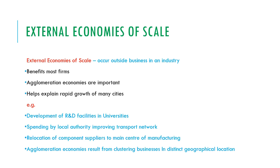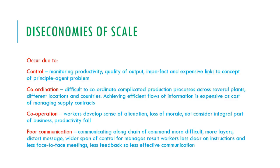So what are external economies of scale? External economies of scale occur outside a business and an industry. They benefit most firms, include agglomeration economies, and help explain the rapid growth of many cities. Examples include the development of R&D facilities and universities, spending by the local authority improving the transport network, the relocation of component suppliers to the main centre of manufacturing, and agglomeration economies resulting from clustering businesses in distinct geographical locations, like Silicon Valley.